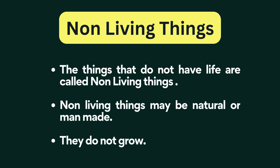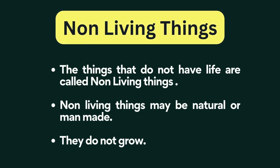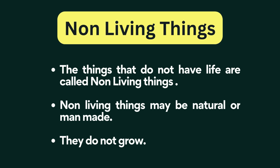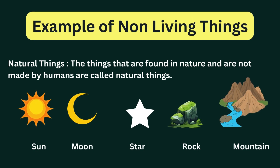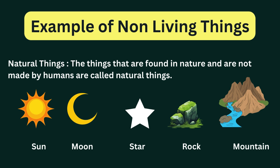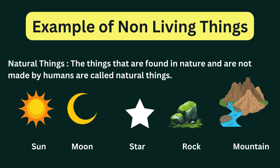Next, we see non-living things. The things that do not have life are called non-living things. Non-living things may be natural or man-made. They do not grow. Non-living things are classified into natural things and man-made things. The things that are found in nature and are not made by humans are called natural things.